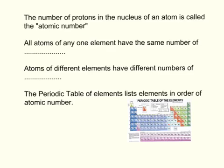Now, the number of protons in the nucleus of an atom is called the atomic number. And all atoms of any one element have the same number of protons. So all atoms of carbon, for example, have six protons in their nucleus. If it doesn't have six protons in their nucleus, it's not carbon.